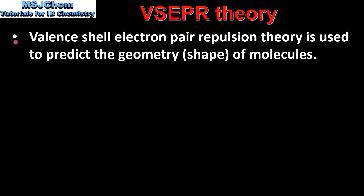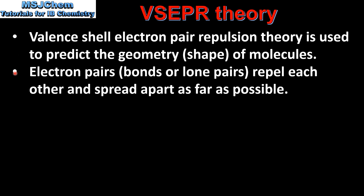Valence-shell electron pair repulsion theory is used to predict the geometry or shape of molecules. Electron pairs — that's bonds or lone pairs of electrons — repel each other and spread apart as far as possible.